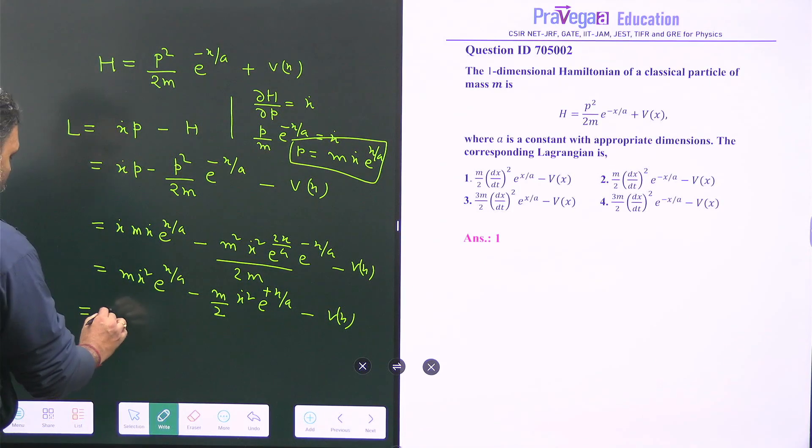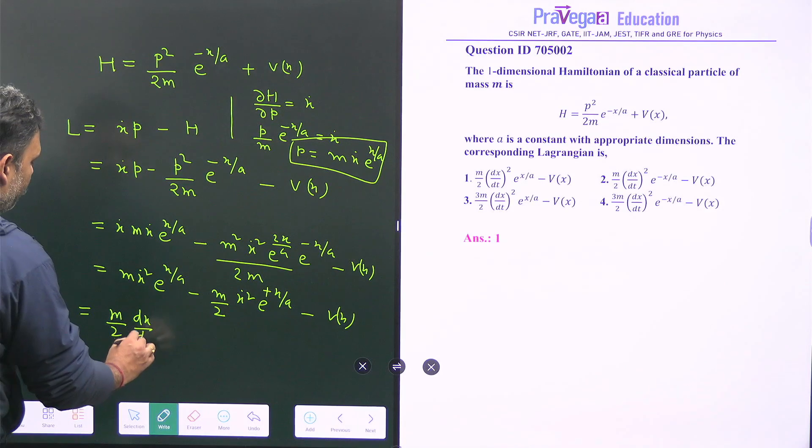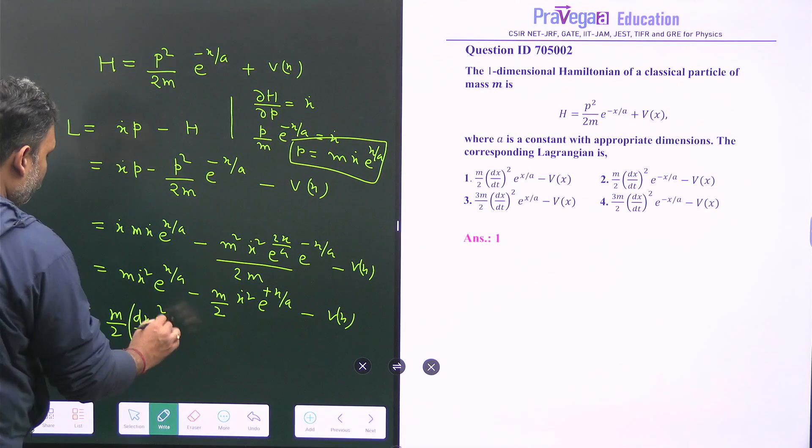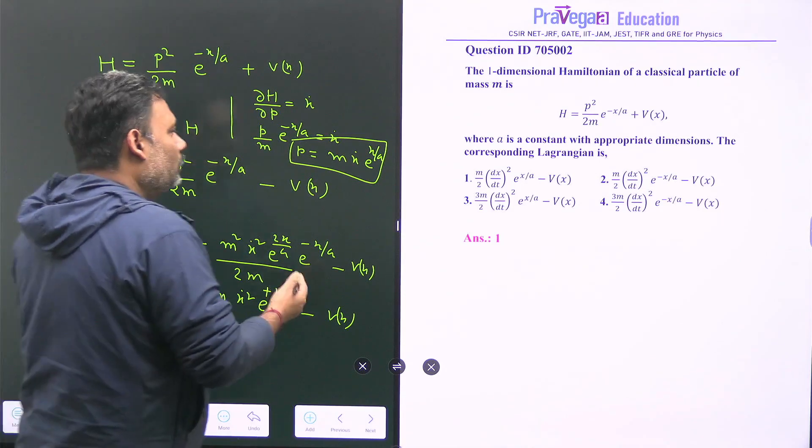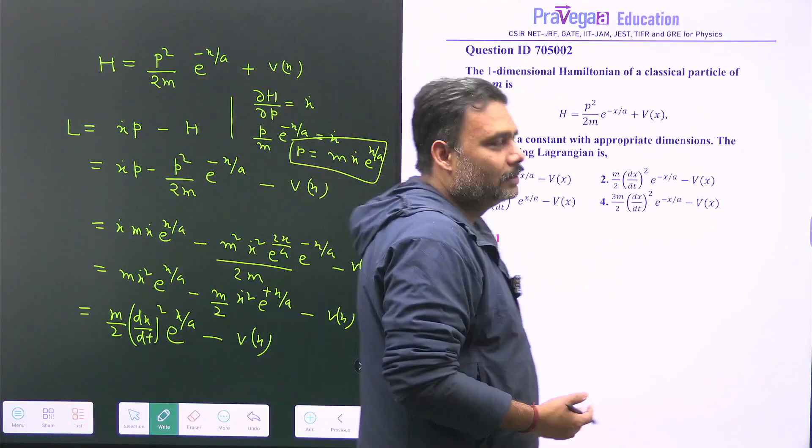So answer is equal to m by 2 dx upon dt e to the power x upon a minus v(x). So option number 1 is the correct one.